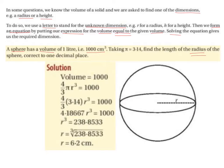We're specifically told to let π be 3.14. So we have 4 over 3, and we swap π for 3.14 in brackets. The r stays as it is, cubed, and equal to a thousand.